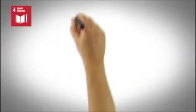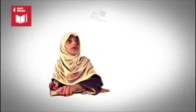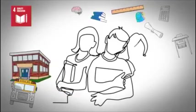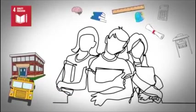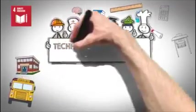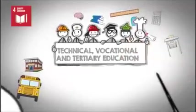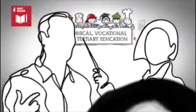Goal 4: Ensure inclusive and equitable quality education and promote lifelong learning opportunities for all. Guarantee all girls and boys receive and have access to quality education, including technical, vocational, and tertiary education by qualified teachers in child, disability, and gender-sensitive facilities.